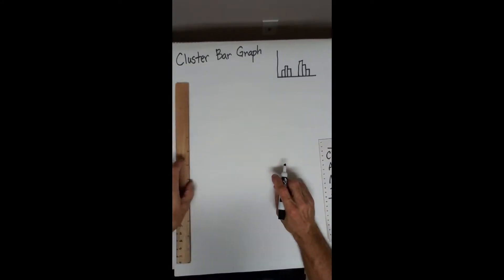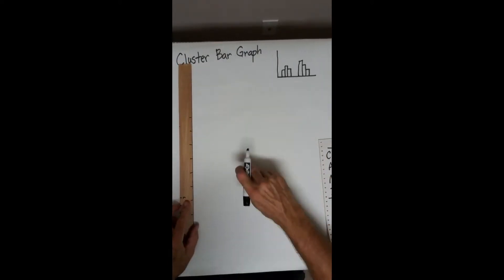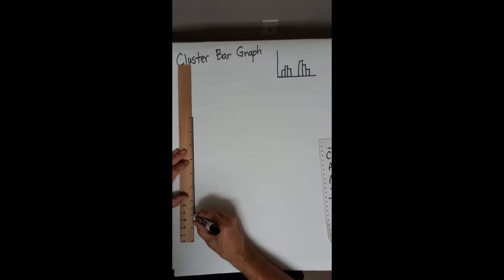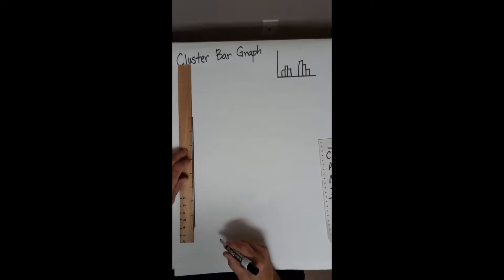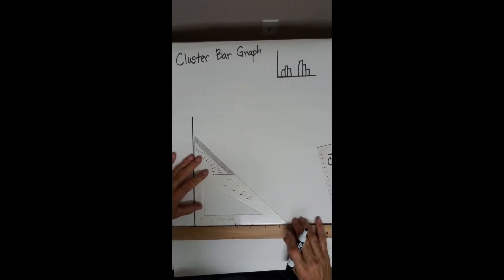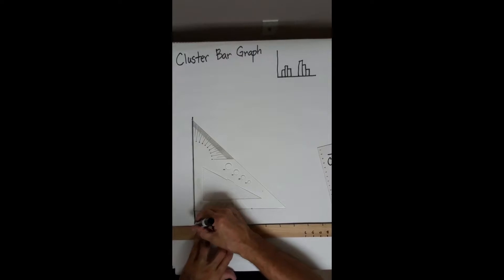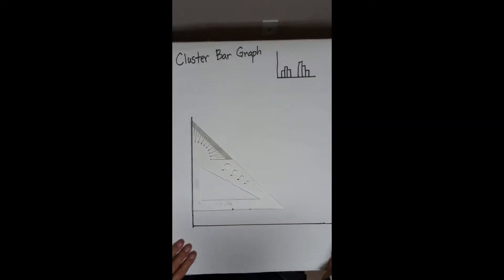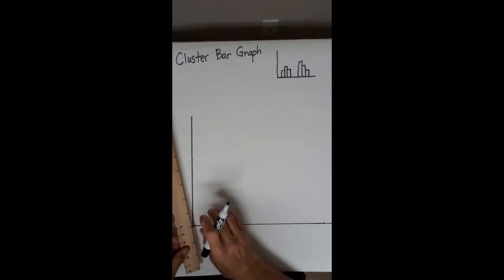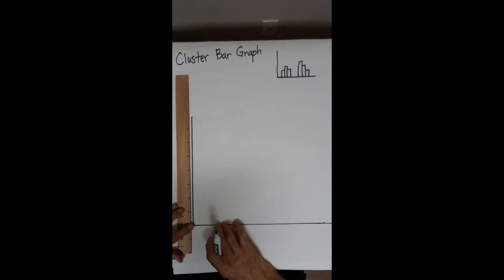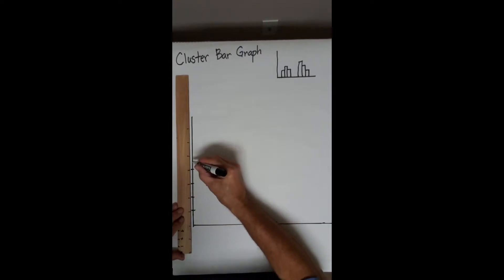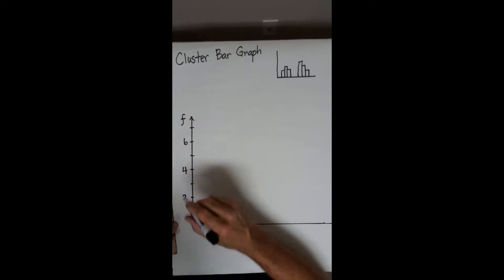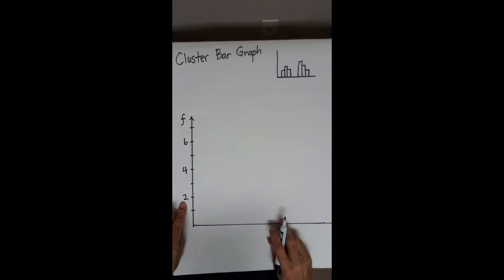Find a ruler and leave room for a title at the top. Mark the frequency scale from zero to seven, going up in increments. Draw a right-angle axis and make it neat — extend it out toward the edge of the paper. Label the vertical axis with numbers zero through seven, and write 'Frequency' as the axis label. Be sure to include both the scale markings and the axis label.